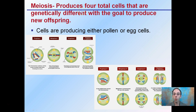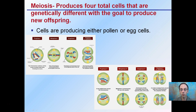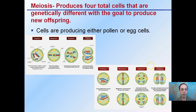Meiosis produces four total cells that are genetically different, with the goal to produce new offspring. These are cells that are producing either pollen or egg cells. There are actually two phases of division, and that's how you go about getting the four total cells in the end. What's happening is the chromosomes are spreading out and being pulled to different poles, and then the centromeres are breaking, causing different copies to result in the end products — increasing genetic variability of the offspring to ideally increase the odds of survival.